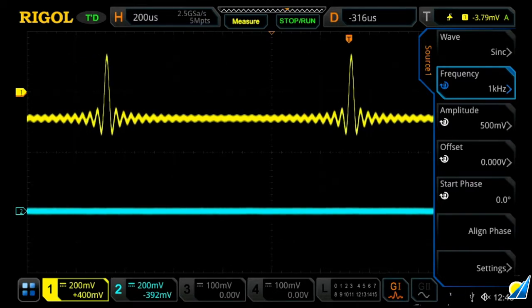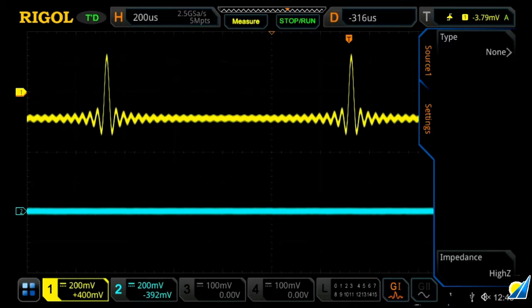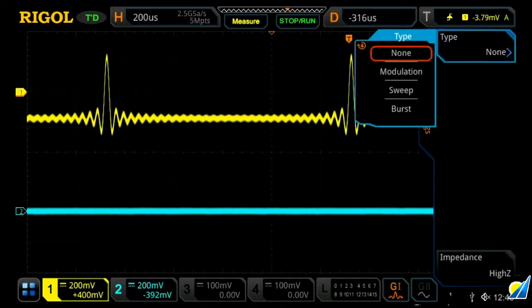And now we can also change our frequency, the amplitude, offset, start phase, align phase, all that. And then if we wanted to, we can go into our settings and go into type and we can choose if we want to modulate the signal, sweep the signal, or burst the signal if we would so desire.